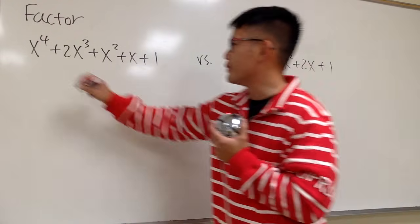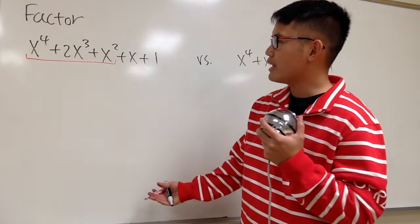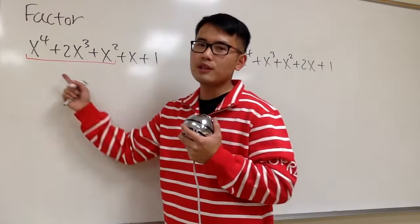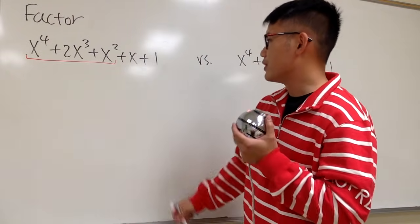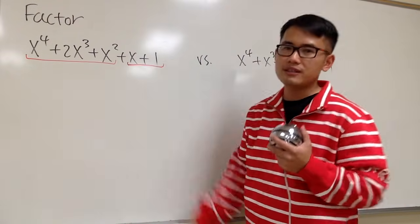I'm going to group the first three terms like this. Well, why? Because first of all, I can factor out x squared, right? That's good. And without being done, let's group the last two like this, then. And let's see what we get.